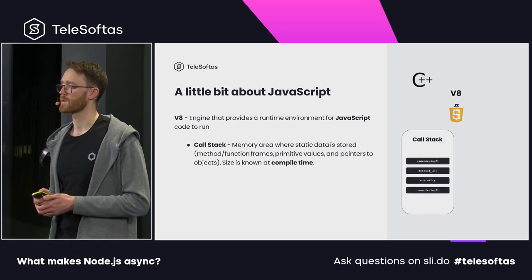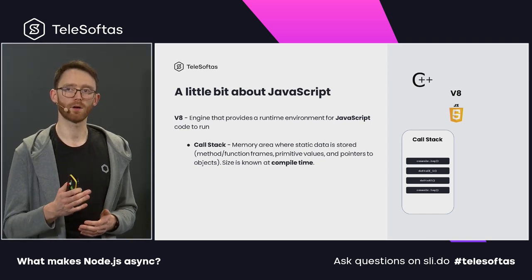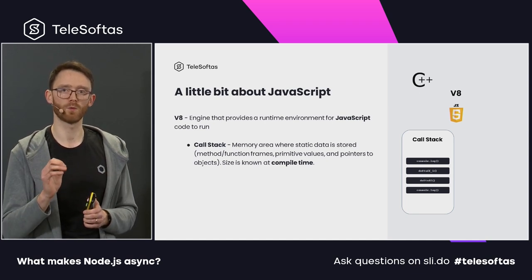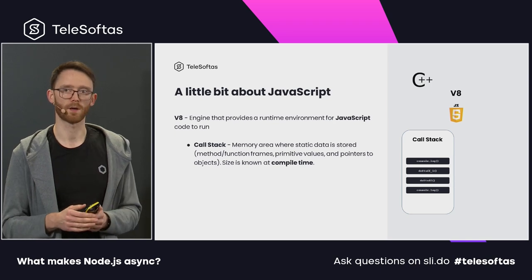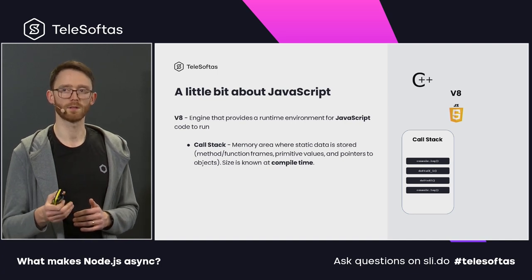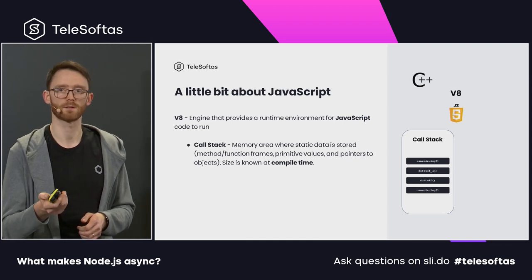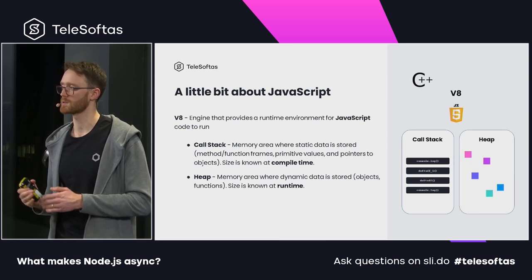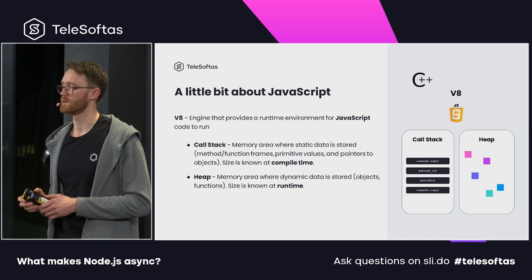V8 has two types of memory handling. The first one is called the call stack — the area where the JavaScript engine knows what code will be running. It knows method frames, primitive values, and pointers to real objects. The size of the call stack is known at compile time, before starting the application. Then we have heap memory, which is more dynamic; it contains the real objects, functions, and is pointed to by stuff in the call stack.